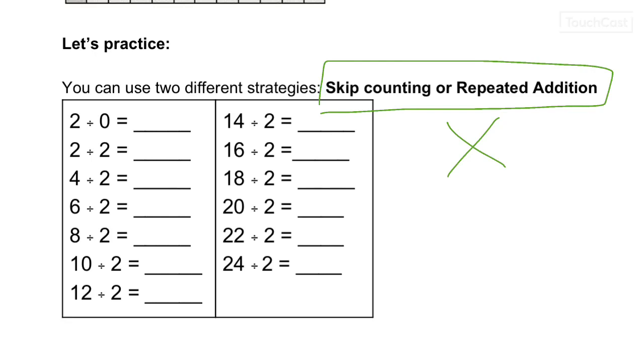So really you're just going to flip it. You're going to say, okay, two times what gives me two? One. Two times what gives me four? Two. Two times what gives me six? Three. Two times what gives me eight? Four. Two times what gives me ten? Five. Two times what gives me twelve? Six.